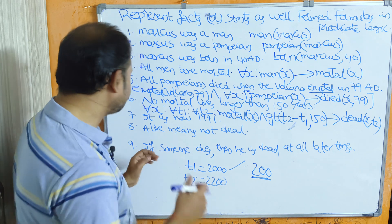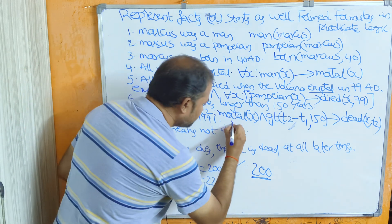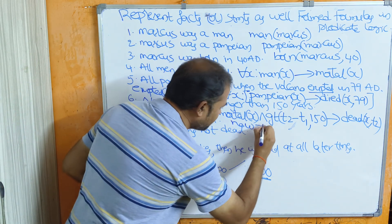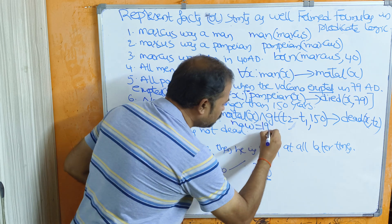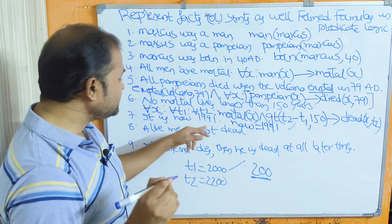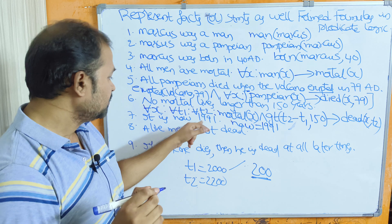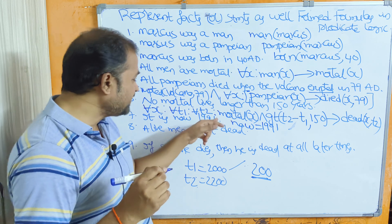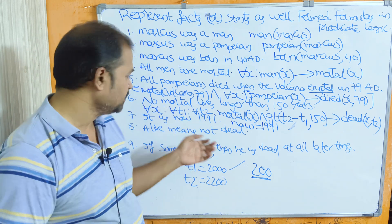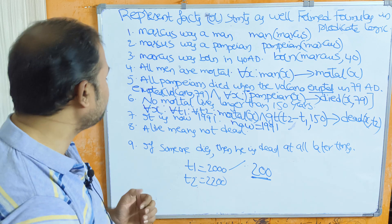Next: 'It is now 1991.' We represent this as: now = 1991. Here 1991 is not a predicate, so this is simply an assignment statement: now = 1991.